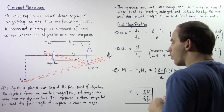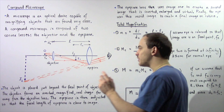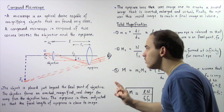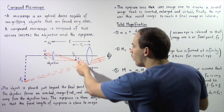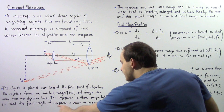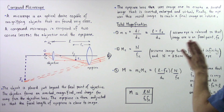So the object is placed just beyond the focal point of the objective, and the objective lens forms an inverted, magnified, real image far away from that objective lens. Next, we turn the knob next to the eyepiece to move it so that the focal point of the eyepiece is almost exactly at the point where image one is formed. The eyepiece is adjusted so that its focal length is close to the image formed by the objective lens.